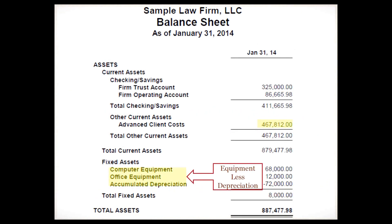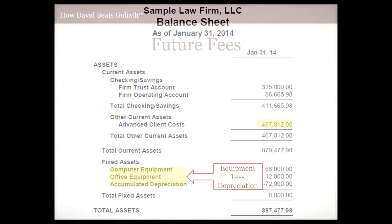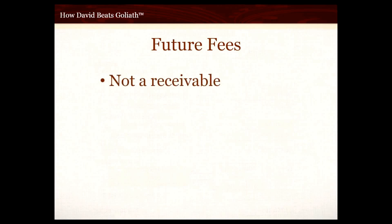Now looking at the fixed assets section, we have some computer equipment and office equipment. You'll notice they are offset partially by accumulated depreciation. I'll get into depreciation in a separate video, so we'll pass over it for now.